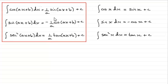Why is it 1 over a? For the moment, let's just accept this rule, but at the very end of the tutorial I'll show you why it's 1 over a.